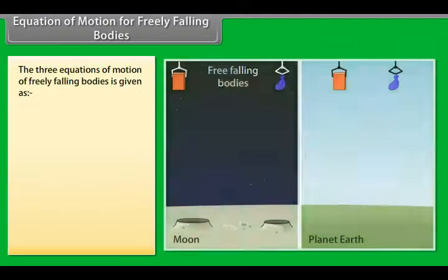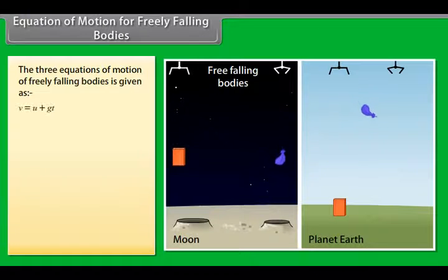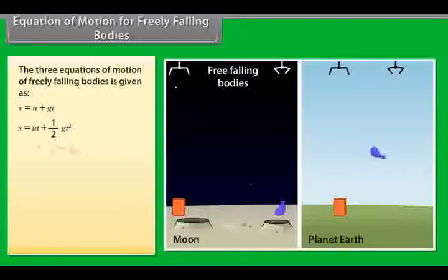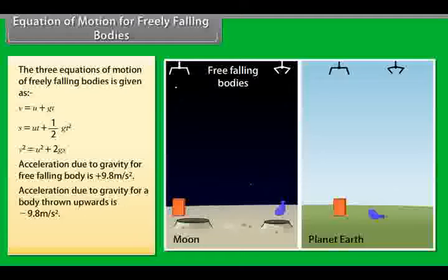Equations of motion for freely falling bodies: V = U + gT, S = UT + ½gT², V² = U² + 2gS. Acceleration due to gravity for a freely falling body is +9.8 m/s², and for a body thrown upwards it is −9.8 m/s².